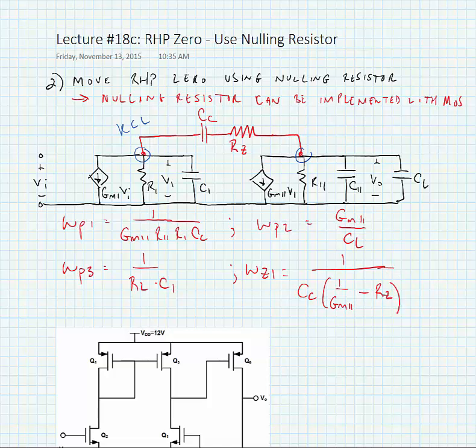So the difference that we see now is that the zero can be moved by adjusting the size of the nulling resistor RZ.